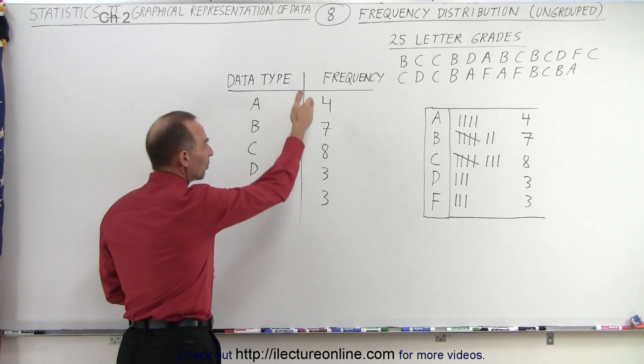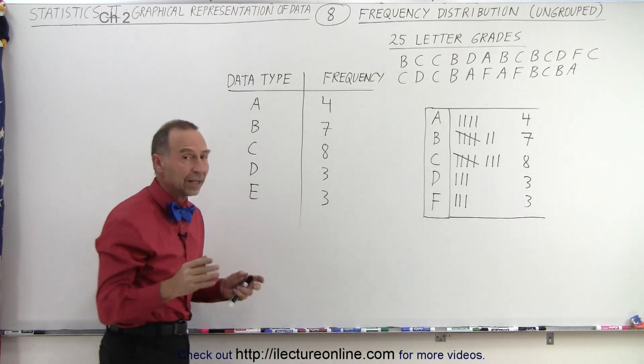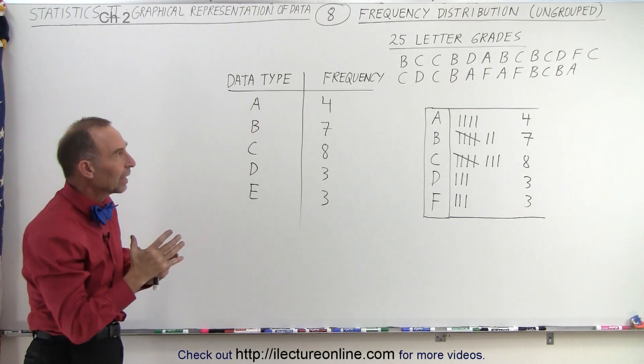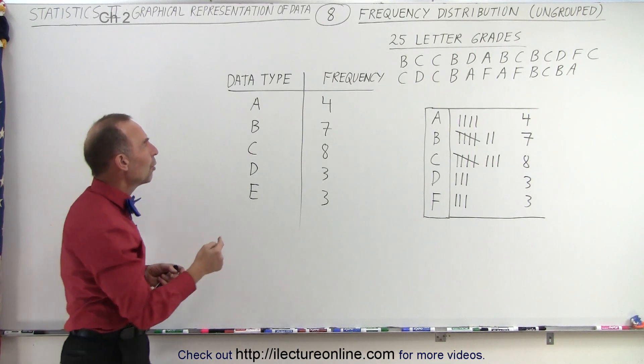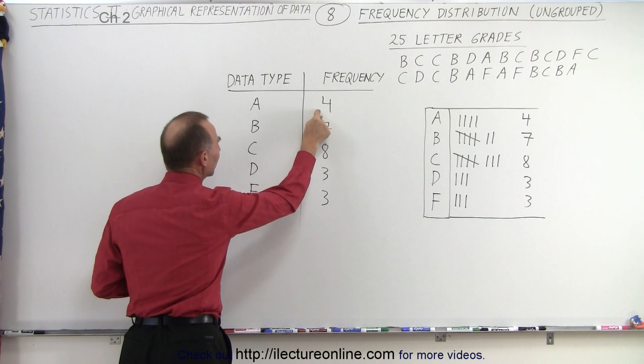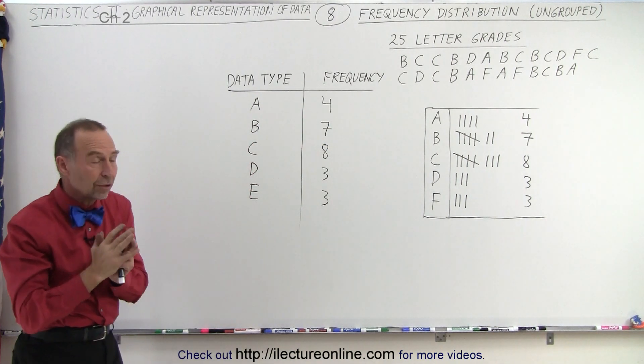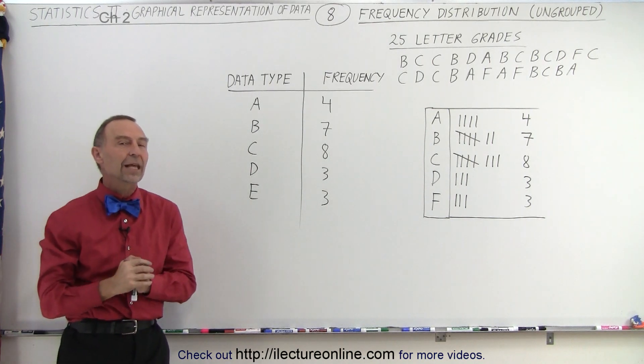So these are the frequencies of occurrence for each of the data types, in this case the data types of letter grades, and we didn't have to group them together. This is what we call ungrouped. We have a one-to-one correspondence between data type and frequency. We didn't have to group things together to make up a specific data type.